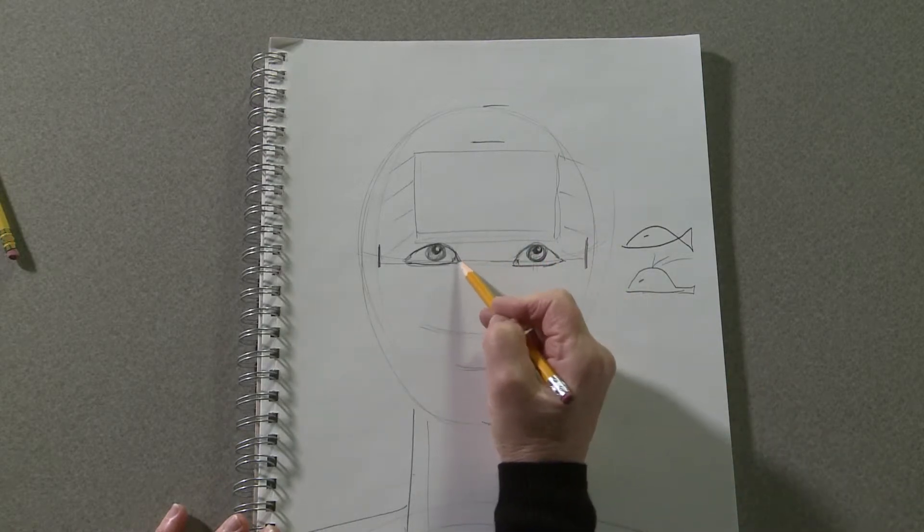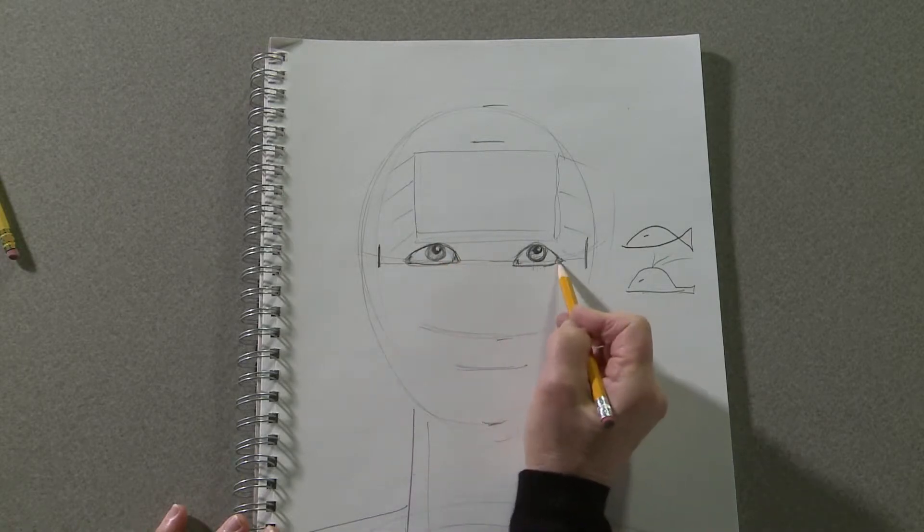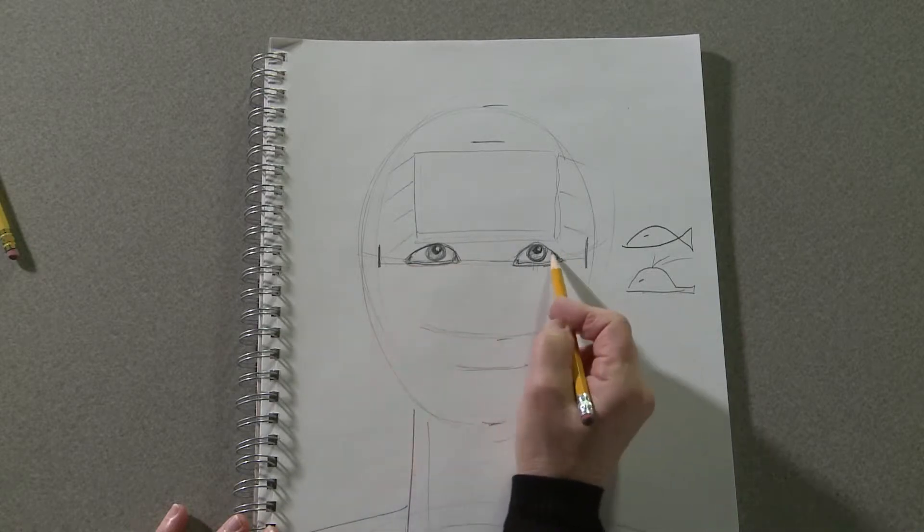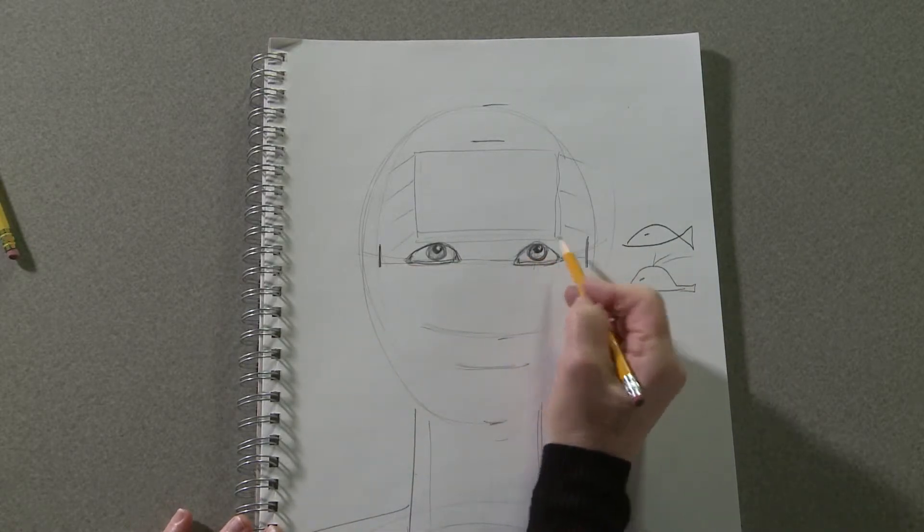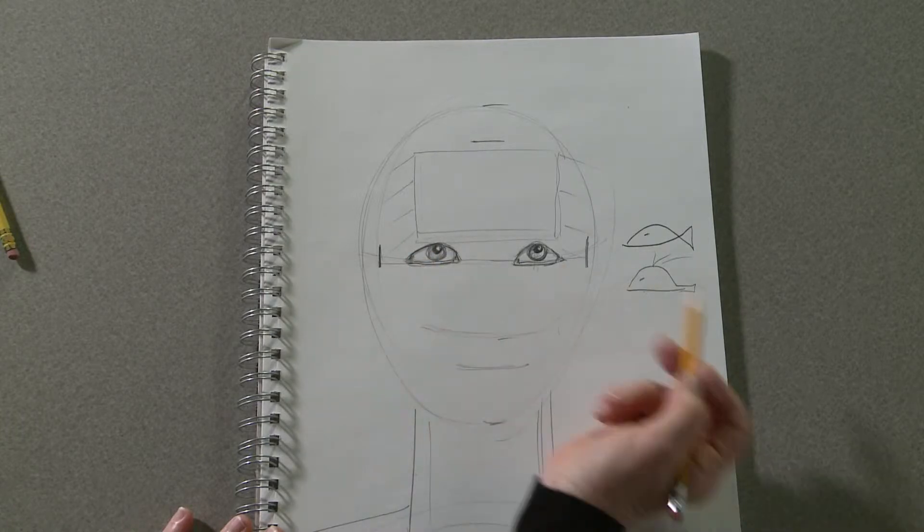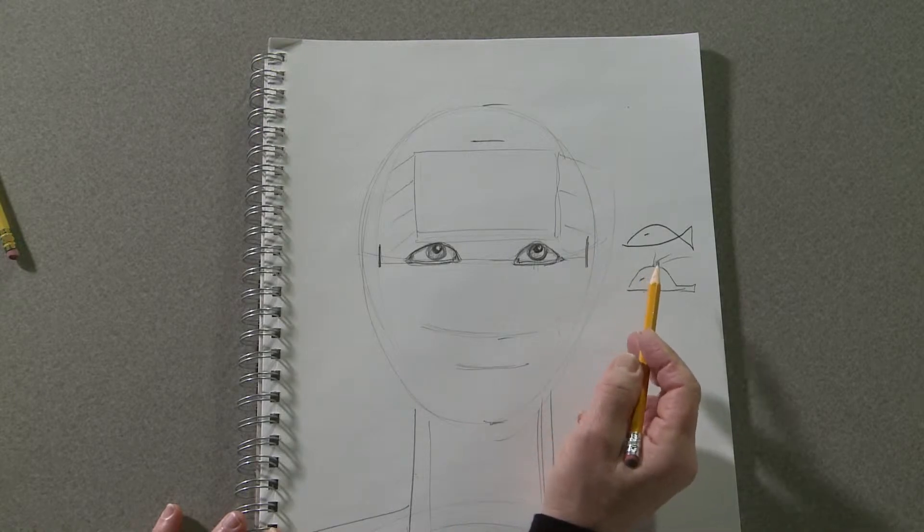You can indicate a little bit of the tear ducts on the outer and inner corners and add a little lower eyelid, a little shading perhaps, so it looks like an eyeball is sitting in there. Make sure your pupils and irises are looking in the same direction.